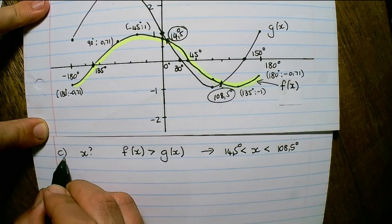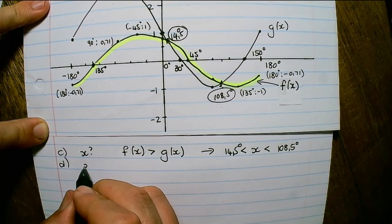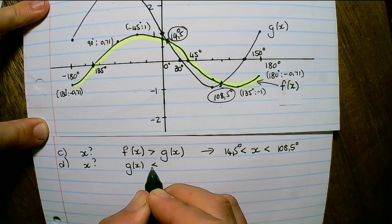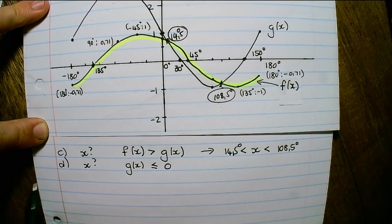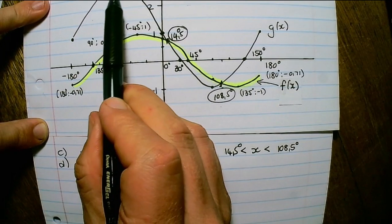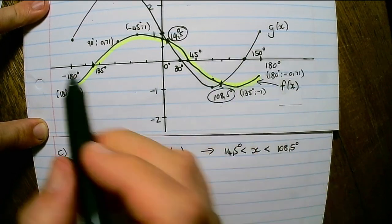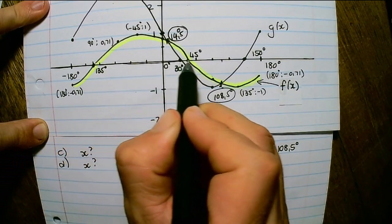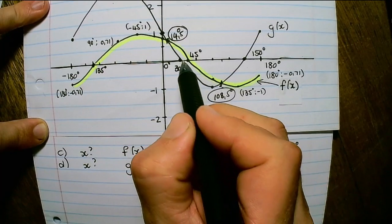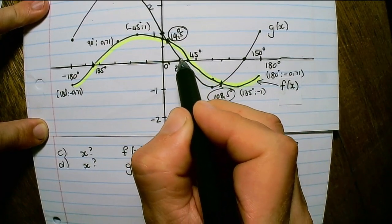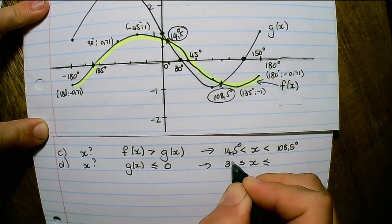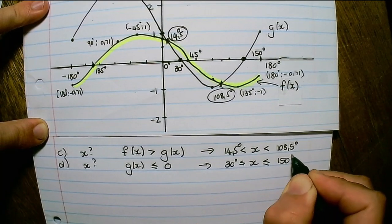Another question: for which values of x is g(x) smaller than or equal to 0? We are no longer concerned about the other graph — we simply want to find where g(x) is smaller than or equal to 0. From the graph, we can see that g(x) is smaller than or equal to 0 between 30 degrees and 150 degrees, so the answer is 30 degrees up until 150 degrees.